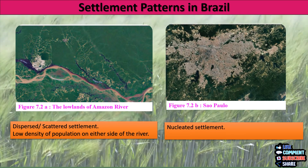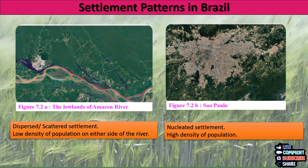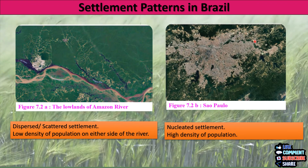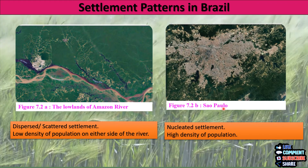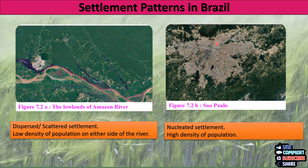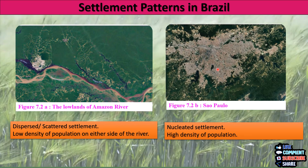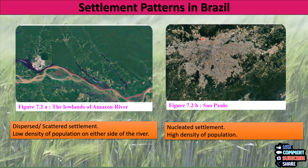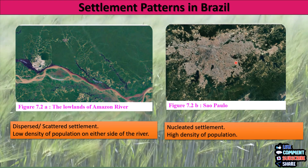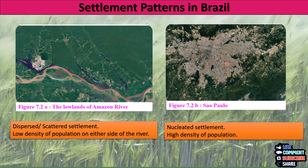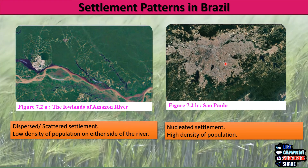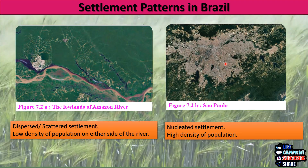Now we move on to the next figure, which is figure 7.2b. This is a city in the coastal area of Brazil — this is São Paulo. If you see here, there is a huge settlement; the settlement pattern here is nucleated, with lots of settlements close to each other. So this type of settlement is nucleated settlement, and since it is nucleated, the density of population is high in this particular area.